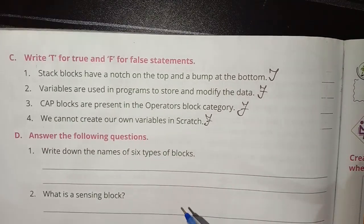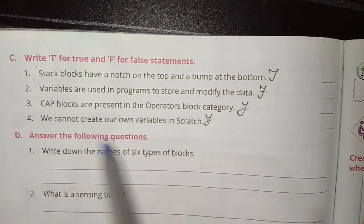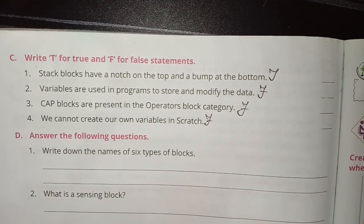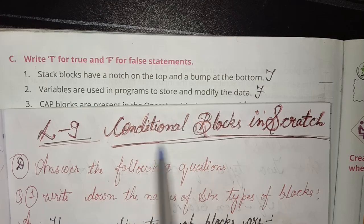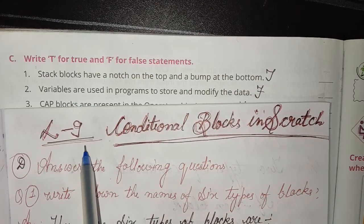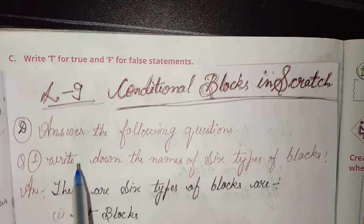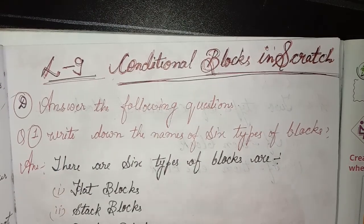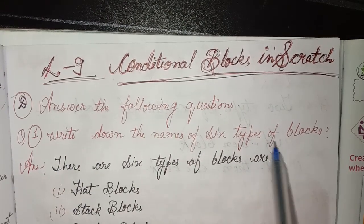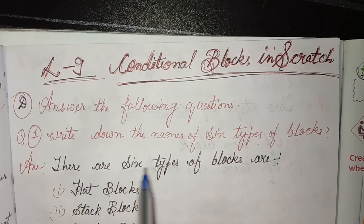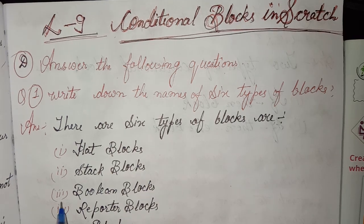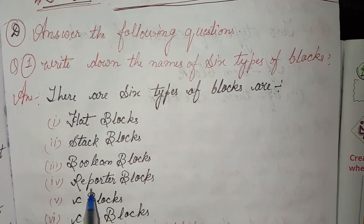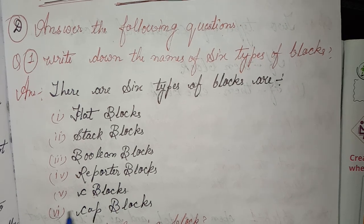I will solve some questions in the book; after that, D and E I will solve in the notebook. Answer the following questions. First, write the names of the six types of blocks. There are six types of blocks: hat blocks, stack blocks, boolean blocks, reporter blocks, C blocks, and cap blocks.